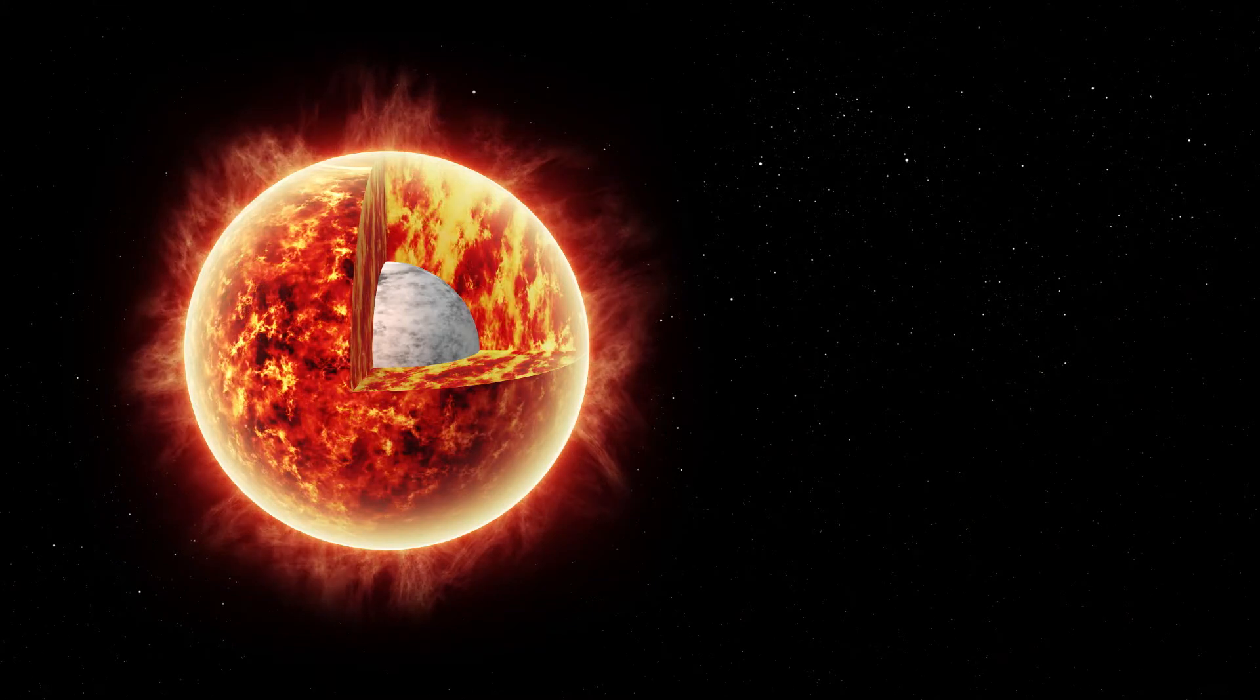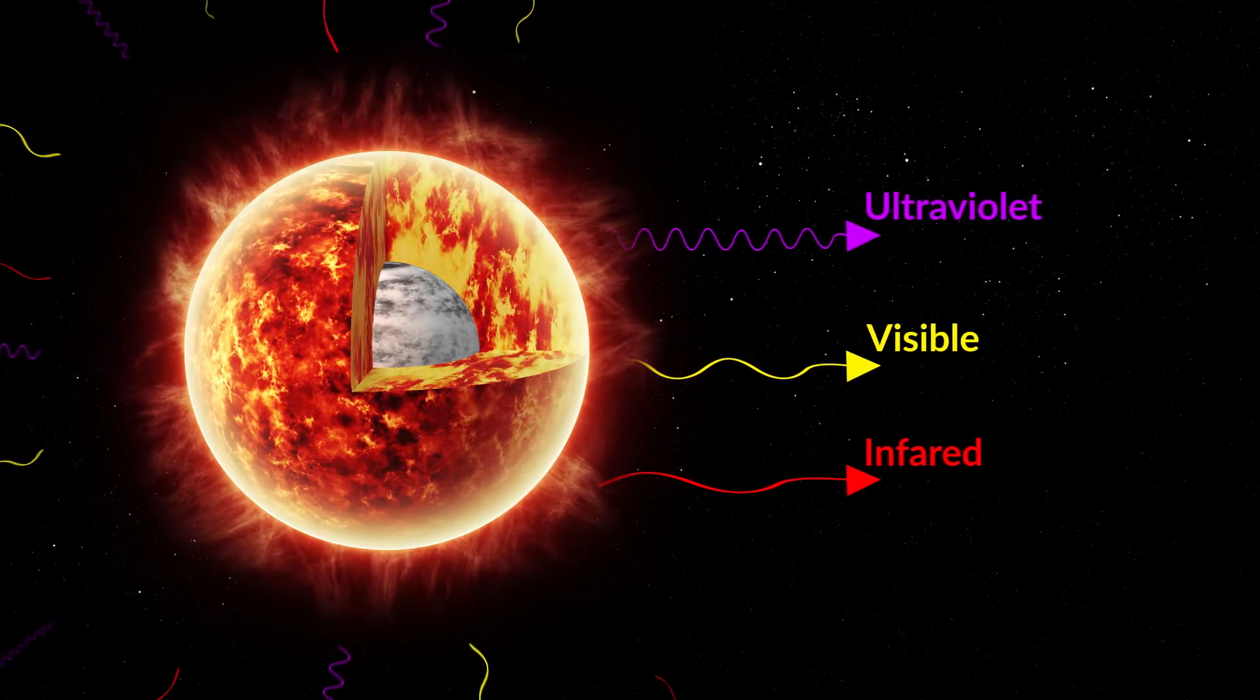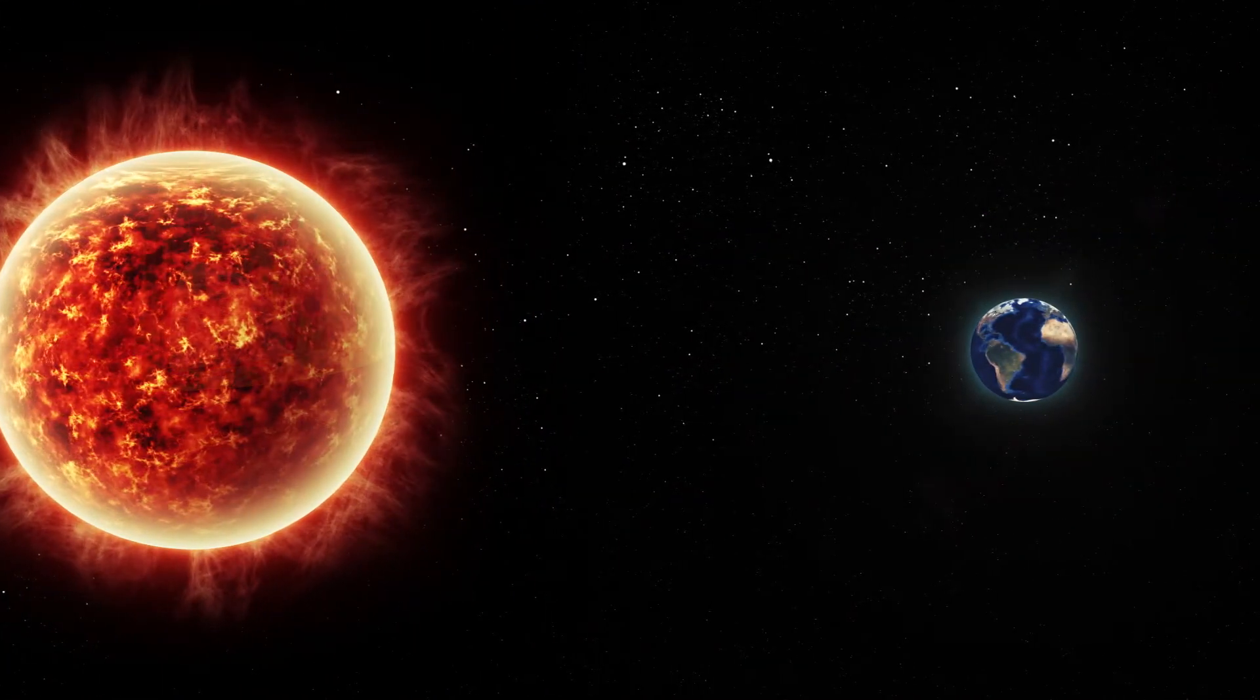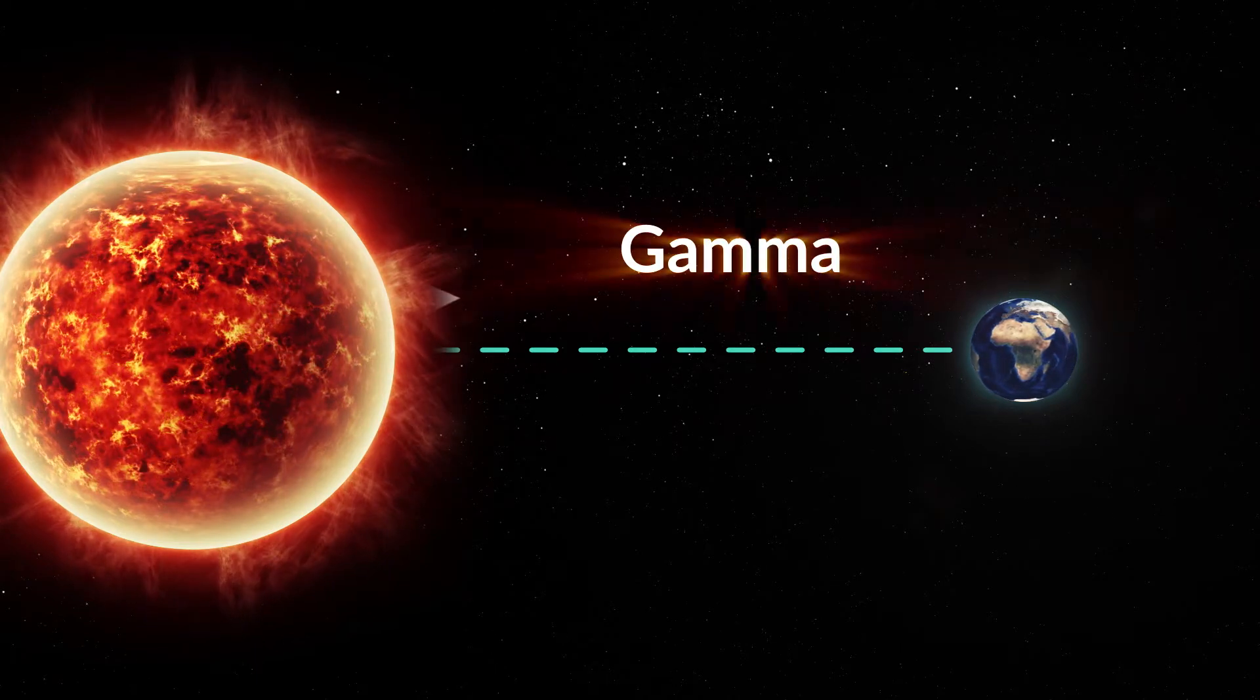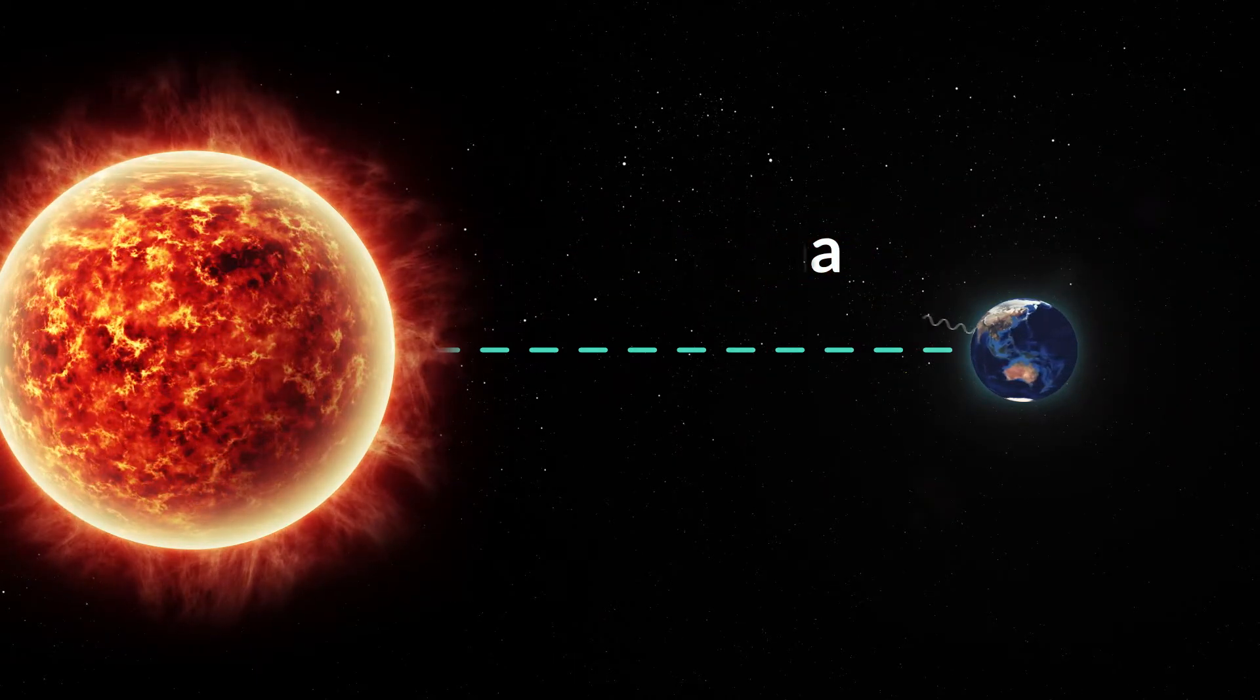The gamma rays lose energy. And most of the radiation that eventually leaves the sun is in the ultraviolet, visible and infrared range of light. The radiation the sun emits travels at the speed of light, that's 3 times 10 to the eighth meters per second, and reaches the Earth in just a little over 8 minutes.